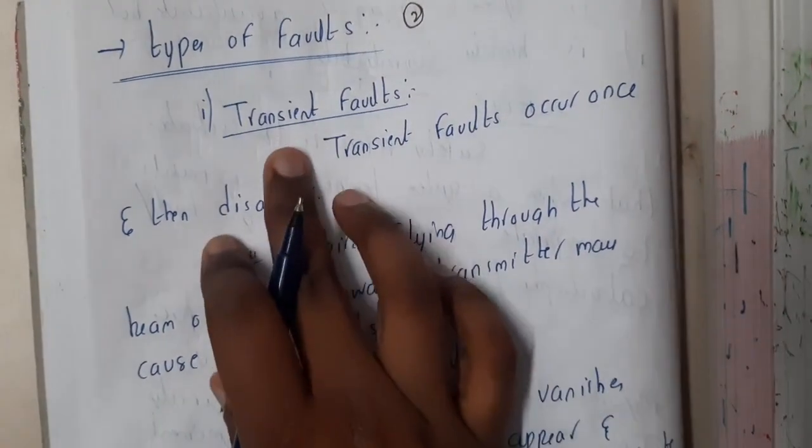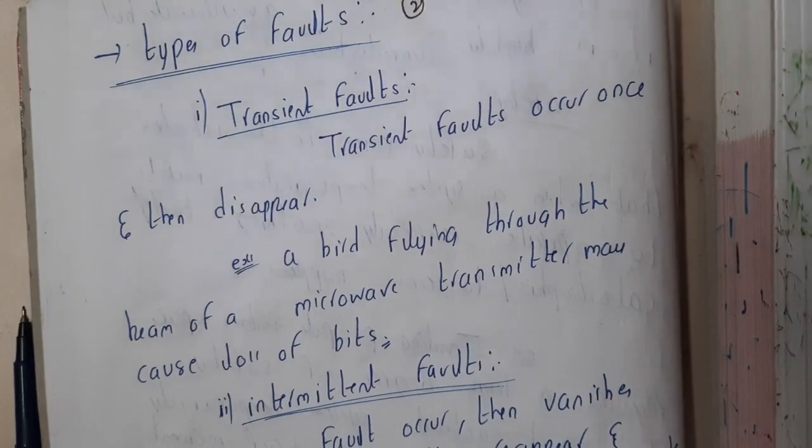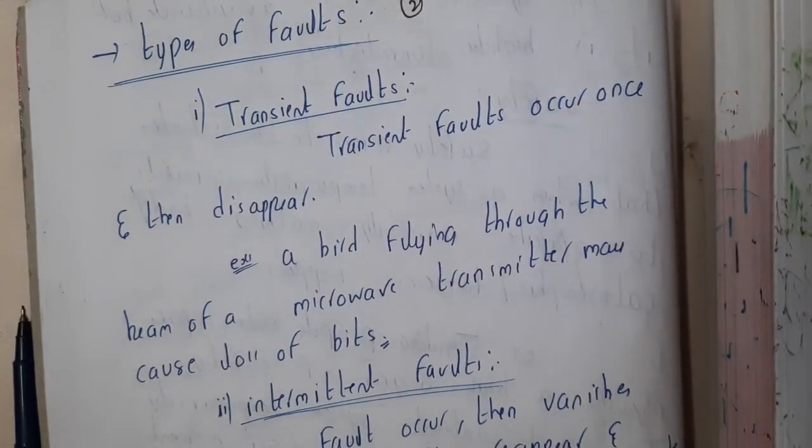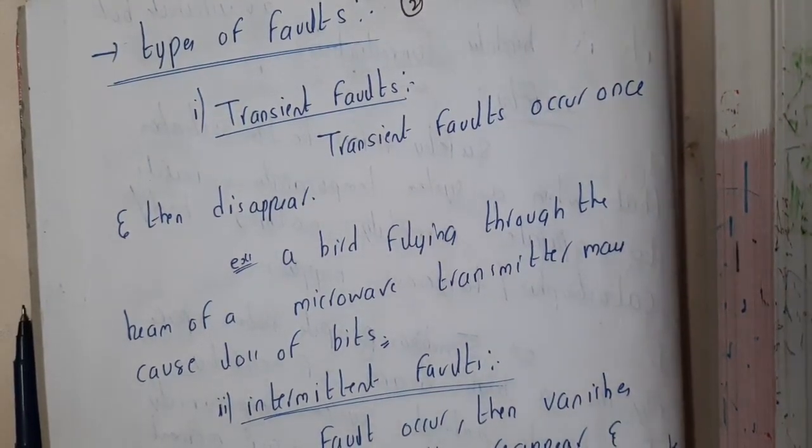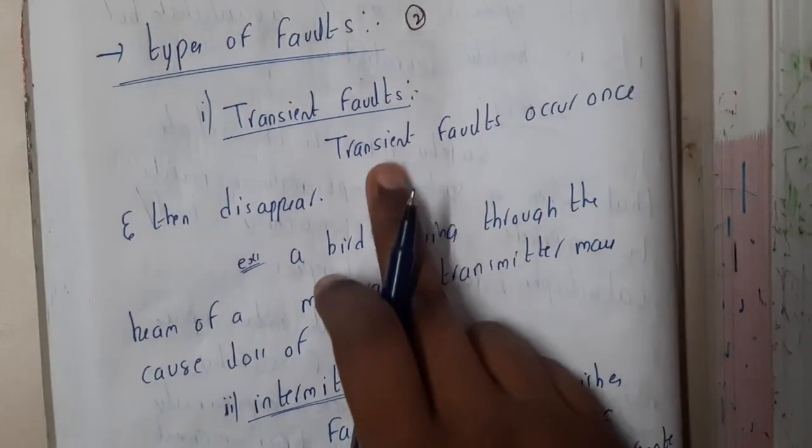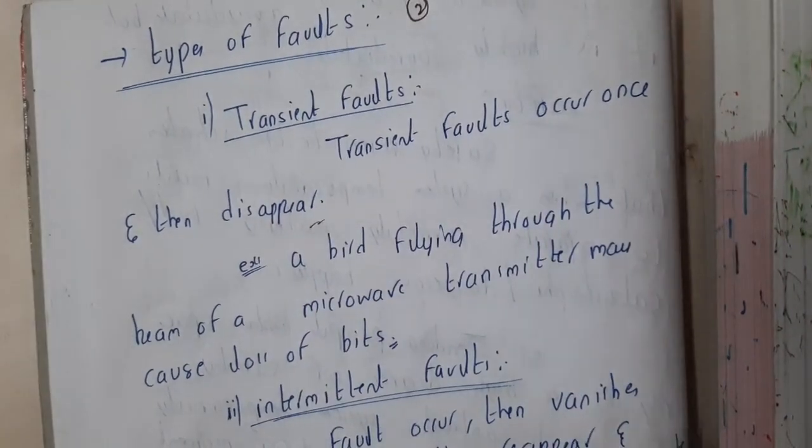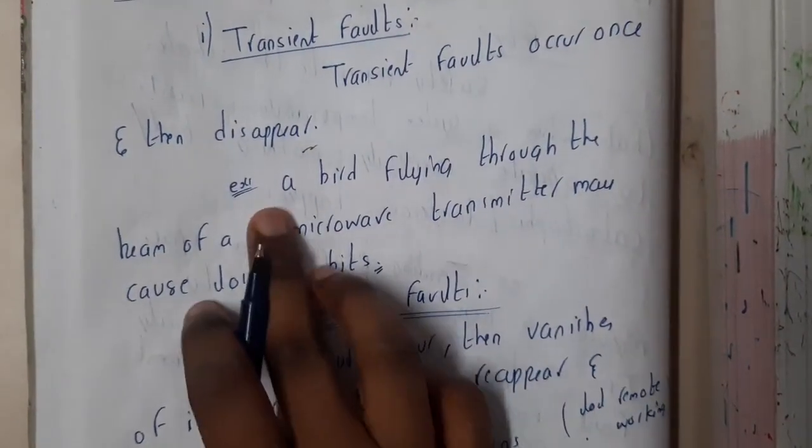The first type is a transient fault. A transient fault is something that comes for some time and vanishes without intimation. Transient faults occur once then disappear - they magically vanish from there.